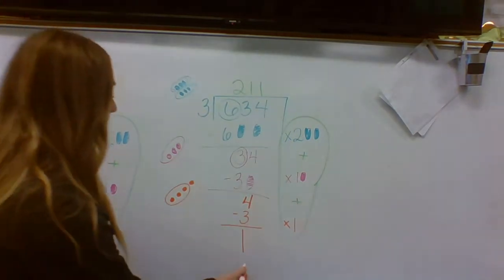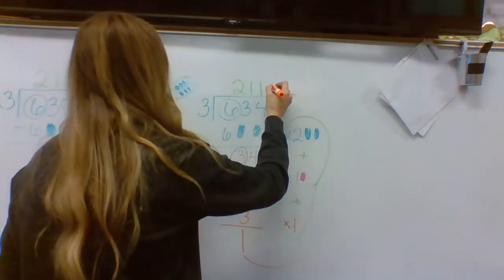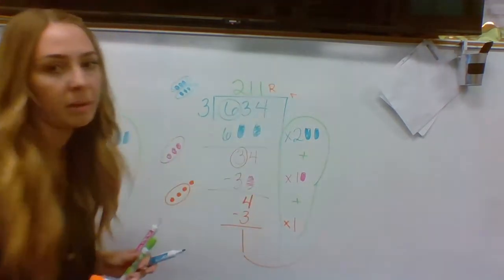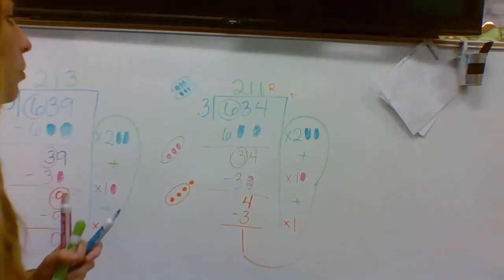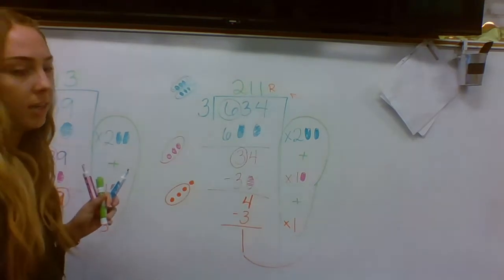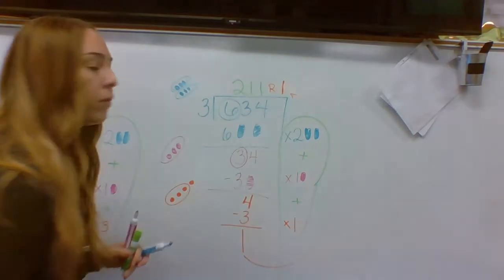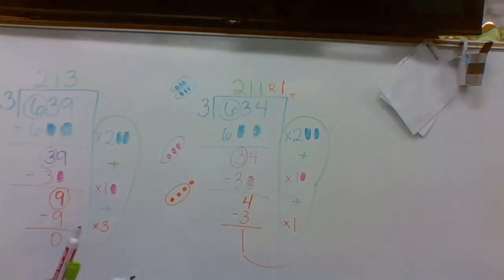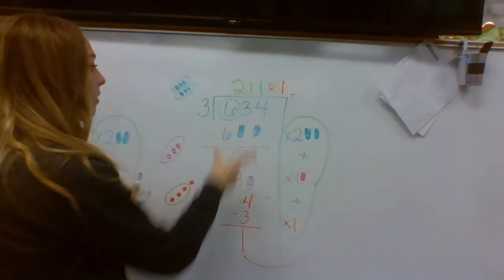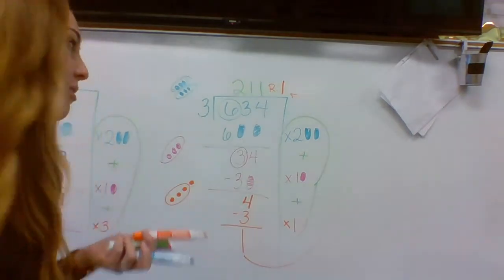So here's what we do with it. We bring it back up to the top and we call it a remainder. The abbreviation for that is just the letter R. So it's 211 with a remainder of one. That means if I have 634, I keep saying bananas. I don't know what it is with bananas.